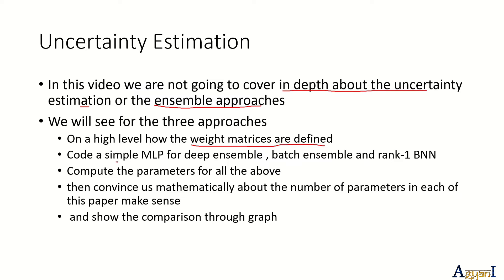On a high level, we'll see how the weight matrices are defined in each paper, then we are going to code a simple MLP for Deep Ensemble, Batch Ensemble, and Rank-1 BNN. Based on this MLP code, we'll compute the parameters for all three approaches, draw a comparison, and also mathematically convince ourselves that the parameters coming from each defined weight matrix actually make sense.